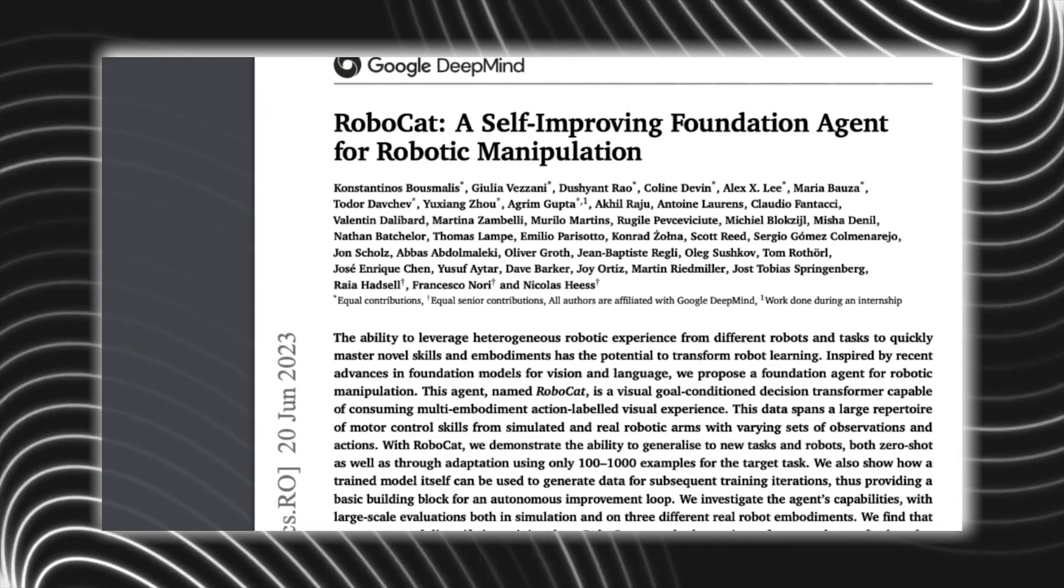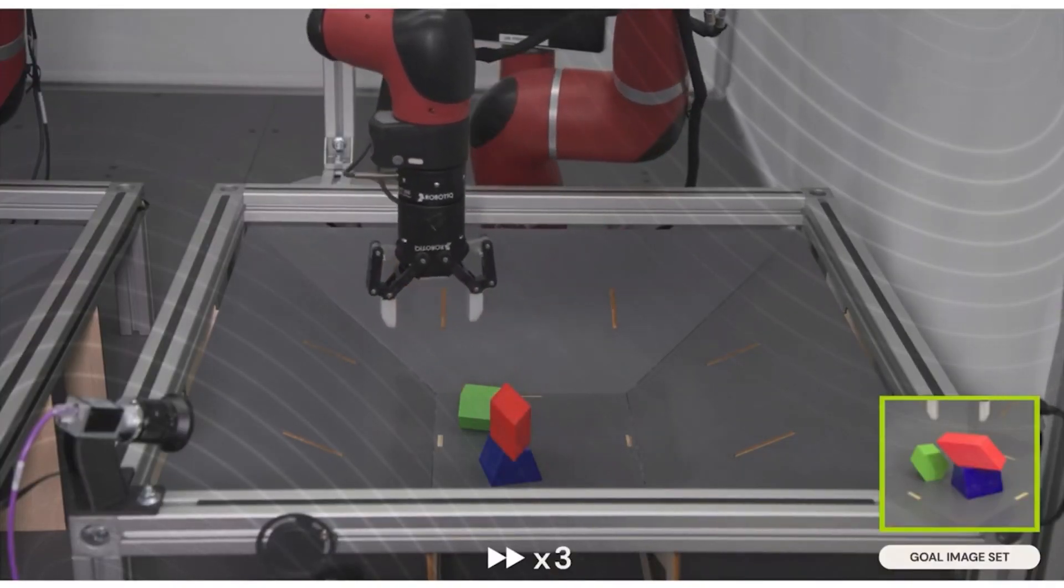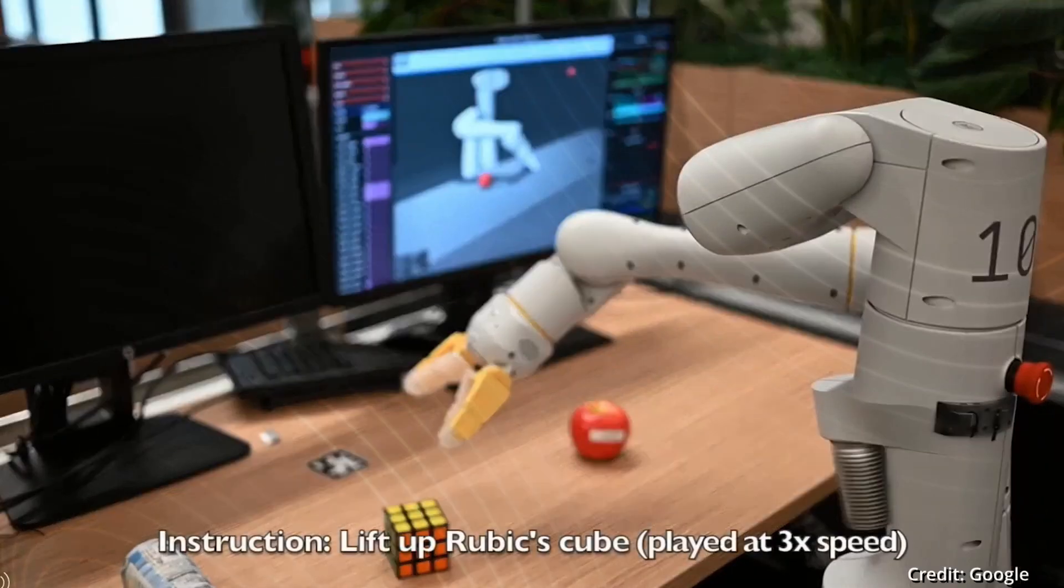In Google's blog post, they even shared a demonstration of RoboCat, and not just on one robot arm but on an entirely new one as well.